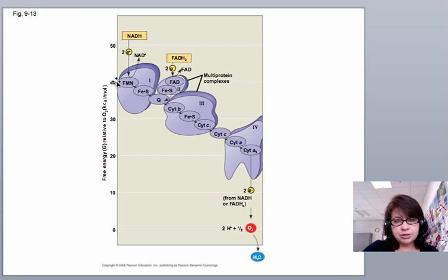NADH is going to drop off its energy at this energy level. This complex gets reduced and pumps a hydrogen across the membrane. Then we have quinone, which is a lipid. You don't have to remember these names so much. It gets reduced.